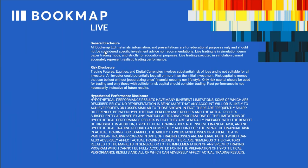Let's go through the disclosures. All Bookmap Limited materials, information, and presentations are for educational purposes only and should not be considered specific investment advice nor recommendations. Live trading is in simulation demo paper trading mode and strictly for educational purposes. Live trading executed in simulation cannot accurately represent realistic trading performance. Our Bookmap simulator comes close — it does read the order book and put you in the queue — however, real orders will obviously make a difference. Trading futures, equities, and digital currencies involve substantial risk of loss and is not suitable for all investors. An investor could potentially lose all or more than the initial investment. Only risk capital should be used for trading. Past performance is not necessarily indicative of future results.